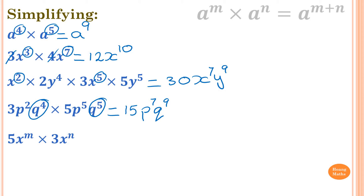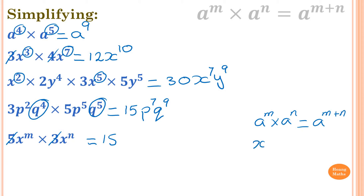Now this one: 5x to the power of m times 3x to the power of n — it's exactly the same process. So 5 times 3 is 15. The rule is A power M times A power N equals A to the power of M plus N. So x to the power of m times x to the power of n is the same as x to the power of m plus n. So we just write x to the power of m plus n.